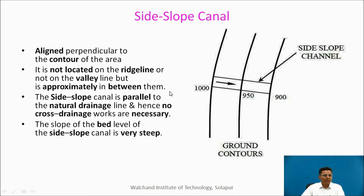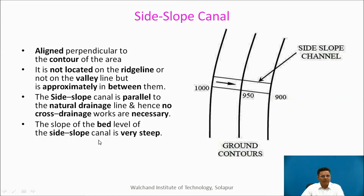The third type of canal is the side slope canal. With contours at 1000 m, 950 m, and 900 m elevation, a side slope canal is constructed perpendicular to these contours. It is parallel to the natural drainages. It is aligned perpendicular to the contours of the area and is not located on the ridge line nor in the valley, but approximately between them. Since the side slope canal is parallel to the natural drainage line, no cross drainage works are necessary. However, the slope of the bed level of the side slope canal is very steep because it crosses the contours.